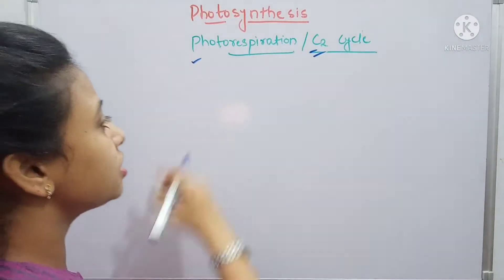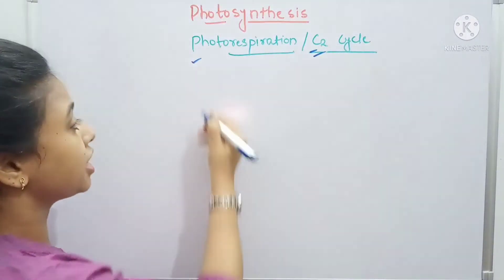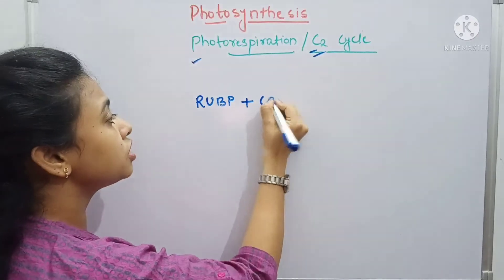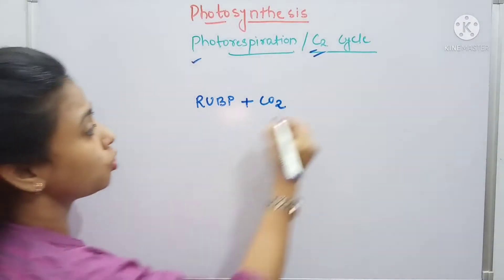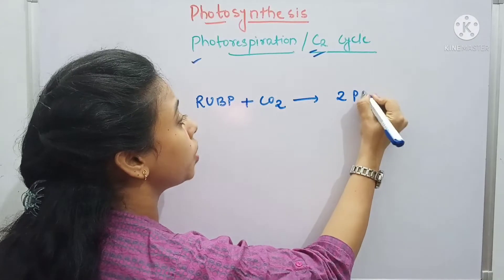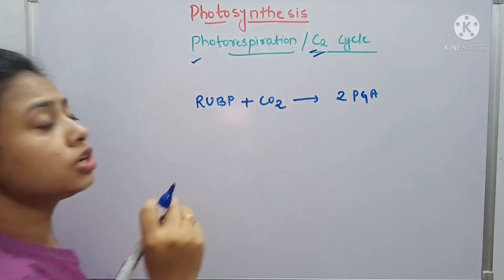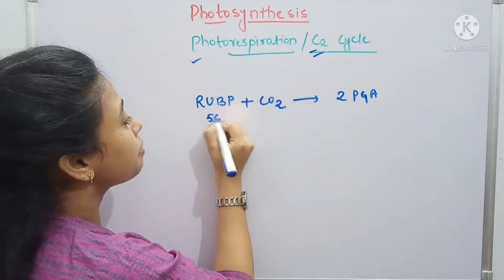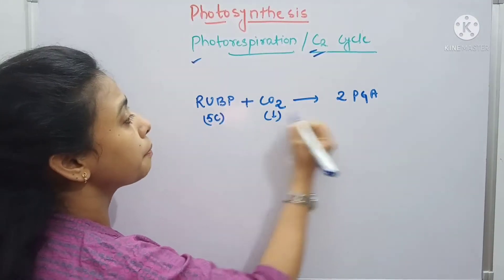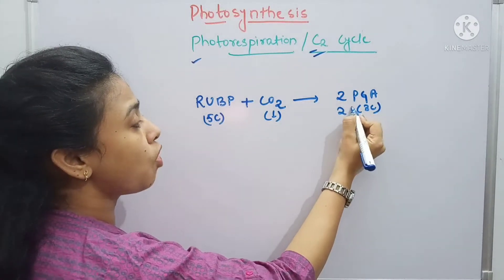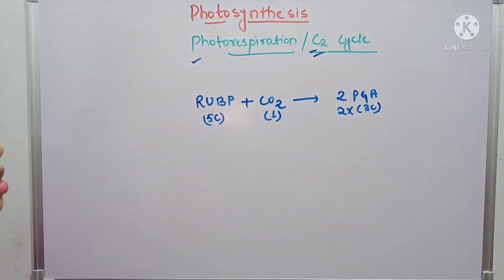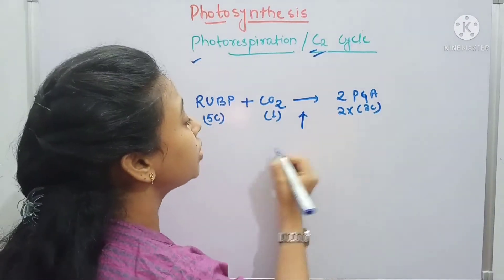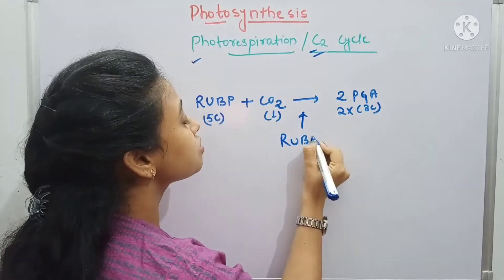As you know, in both the C3 and C4 cycles there is a compound called RuBP. It gets merged with one molecule of CO2 and gets converted into two molecules of 3-phosphoglyceric acid. RuBP is a five-carbon compound, CO2 is a one-carbon compound, and 3-PGA is a three-carbon compound — that's why two molecules of 3-phosphoglyceric acid are formed. This is done with the help of an enzyme known as RuBisCO.